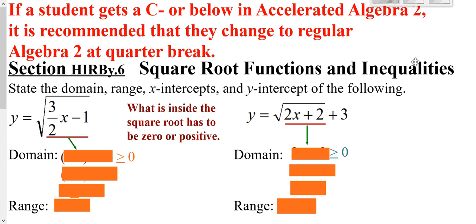As a side note before we get going: for the most part, if you're in Accelerated Algebra 2 and you're at a C minus or below, it's recommended here at quarter time that you switch to regular Algebra 2.